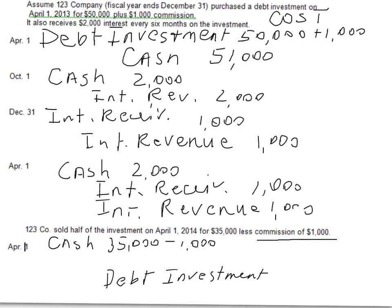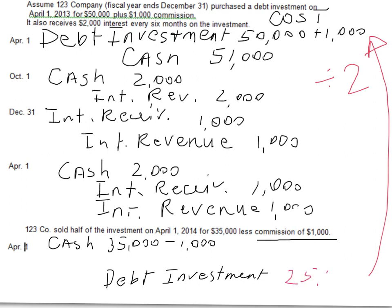Be very careful — we sold half the investment. Every student's first instinct is to take $50,000 and divide by 2 to get $25,000, but the investment was recorded at cost: $51,000, not $50,000. Always go back to the original investment and check the actual cost. Take $51,000 divided by 2 to get the cost of the investment being sold, which is $25,500. Comparing cash proceeds of $34,000 to the cost of $25,500 gives a gain on sale of investment of $8,500.